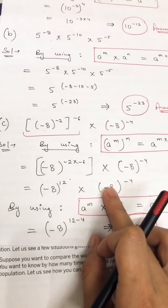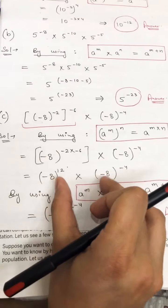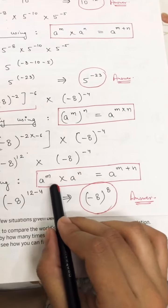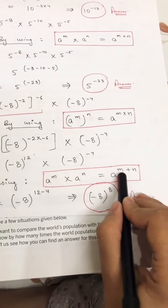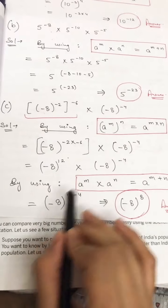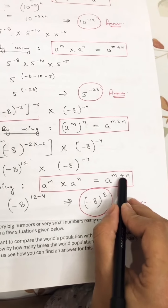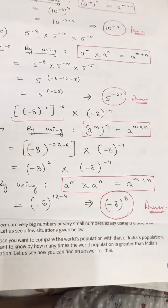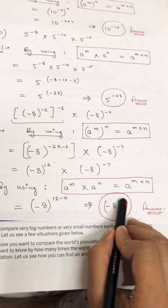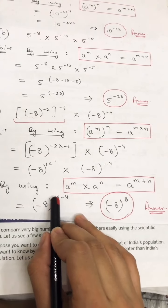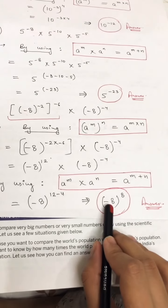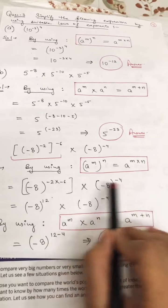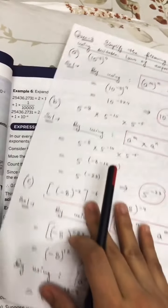Now base is same — minus 8 and minus 8 — and powers are different. We apply: a raised to power m multiplied by a raised to power n equals a raised to power m plus n. Writing minus 8 one time, powers are 12 plus minus 4, so the plus sign removes and minus 4 comes: 12 minus 4 is 8, and bigger value 12 has plus sign. So the answer is minus 8 raised to power 8. Wherever you use a law, you must highlight and mention which law you are using — without this you cannot get full marks.